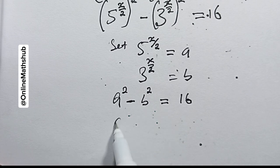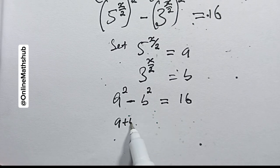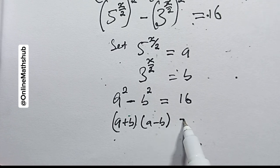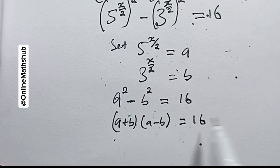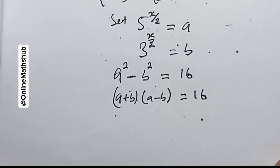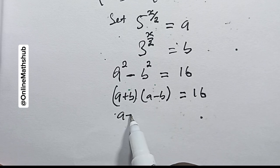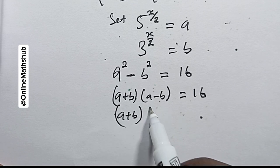This is now the difference of two squares, which you know is the same as (a + b) multiplied by (a − b) equal to 16.